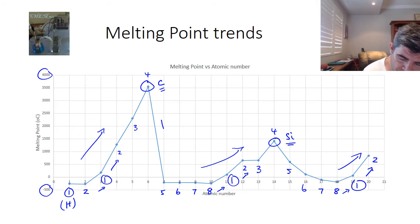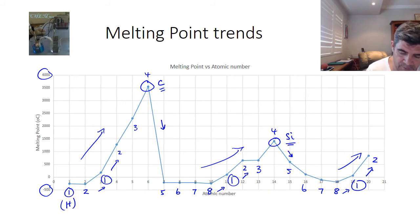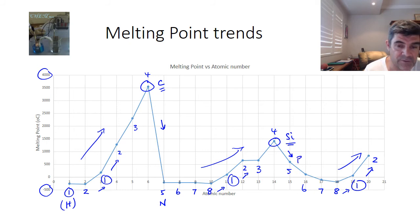Notice also that from group 4 to group 5 there is a drop — more significant between carbon and nitrogen than between silicon and phosphorus — but nevertheless it's there.